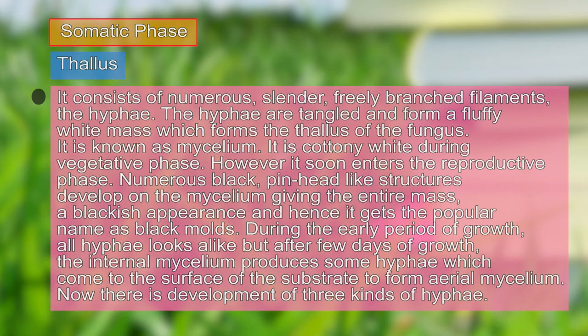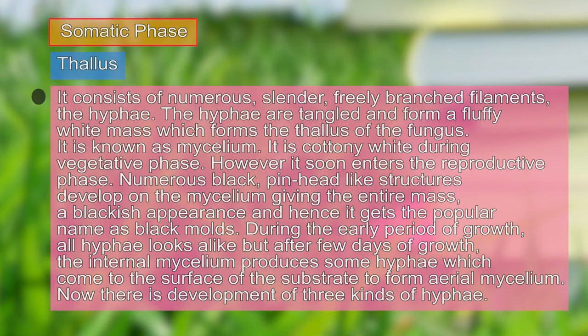This white cottony mass during the vegetative phase changes color and becomes black or deep brown as numerous spores develop during the reproductive phase. This blackish appearance gives Rhizopus its popular name — it is also known as black mold. During the early period of growth all hyphae look alike, but as the fungus develops, three different types of hyphae are recognized.